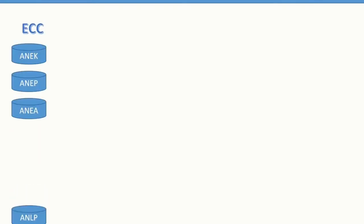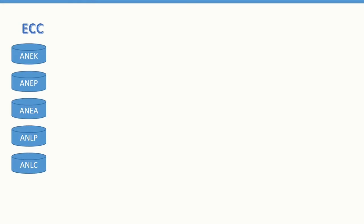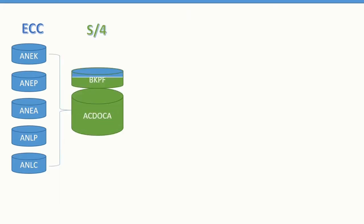Let's dive deeper and look at the new architecture created for new asset accounting. As part of ECC, from the backend or data storage perspective, there were multiple tables created — actual data, planning data, header data, line item data — all stored differently. After the introduction of S/4HANA, all of this comes into just two tables: header data is still available in BKPF, and all line item data comes into ACDOCA. This means you only have to look at two tables for all your actual data.